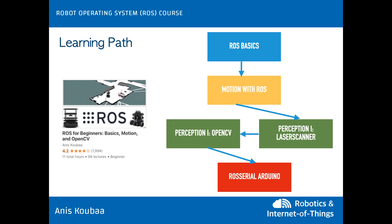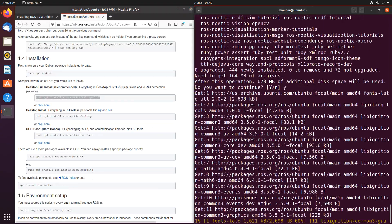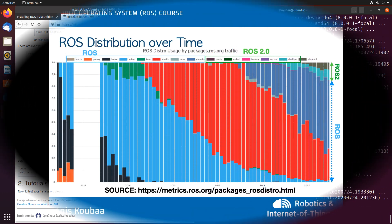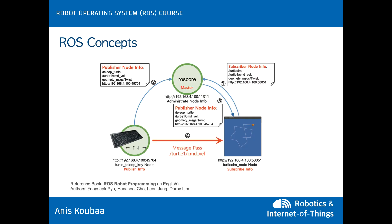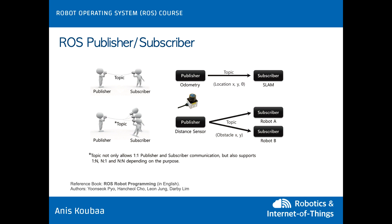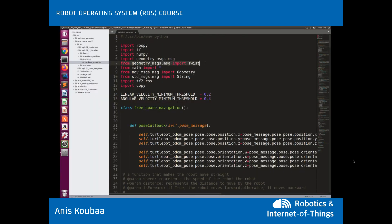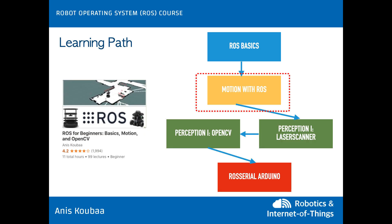Let's look at the learning path you will be following in this course. The course is organized in three main parts. The first part deals with ROS basics and fundamental concepts. First, you will learn how to install ROS on your Ubuntu machine and easily set up your workspace and ROS packages. Then you will learn the fundamental concepts of ROS, namely the ROS computation graph, which includes nodes, topics, messages, services, and action lib. I will demonstrate how to develop simple programs with ROS in both C++ and Python client libraries.